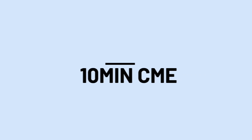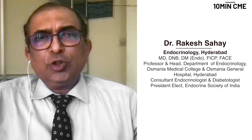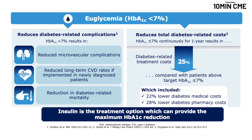Welcome to today's 10-minute CME on individualizing insulin therapy for type 2 diabetes. I am Professor Rakesh Sahai from Hyderabad. Maintaining euglycemia is very important in all patients with type 2 diabetes, as it helps in reducing microvascular and macrovascular complications and brings down total diabetes-related costs. For achieving euglycemia, insulin is a very important option because it provides the maximum reduction in HbA1c compared to any other available therapy.